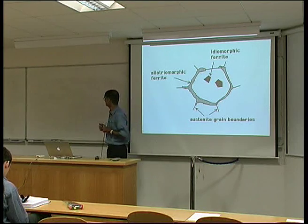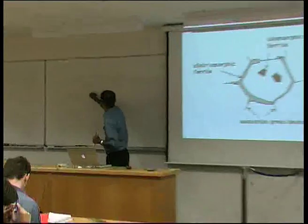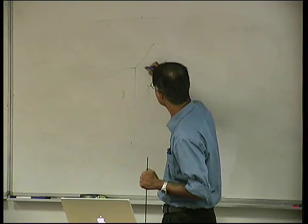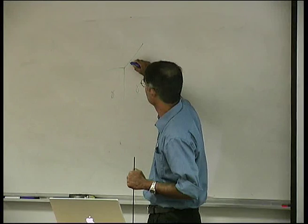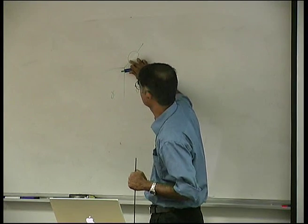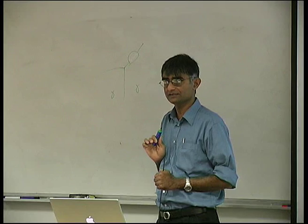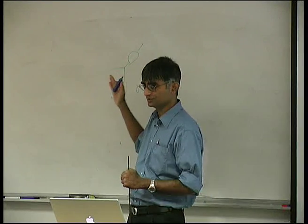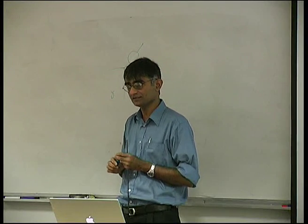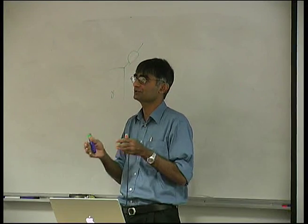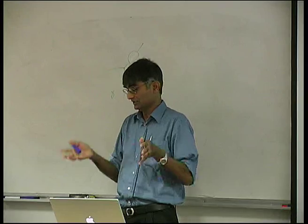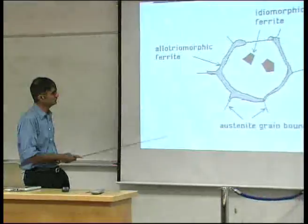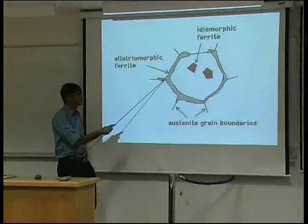Because when you nucleate something on a boundary — let's imagine this is a grain boundary between austenite grains — if you get something on the boundary, then in the process you eliminate some of that boundary. So that's a gain in energy, because the boundary is a defect. And that's the reason why heterogeneous nucleation is much easier than homogeneous nucleation, where nucleation happens inside the perfect crystal. So the first place where ferrite nucleates is at an austenite grain boundary.